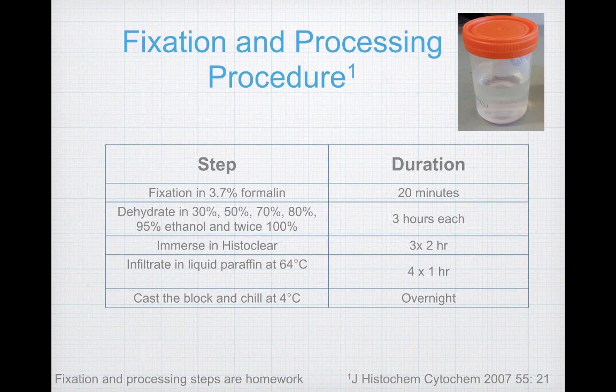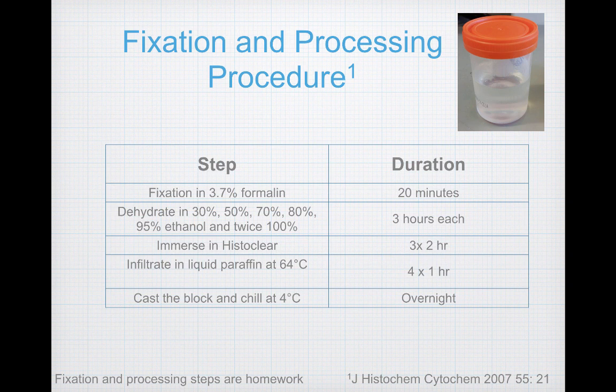Now I've given you background on the major steps in paraffin embedding. Here are a few more details — these steps are done for homework outside of class on your own schedule. Fixation starts with 3.7% formalin; your cartilage will be immersed in this for a duration of 20 minutes. After that, dehydrate the tissue in graded ethanol solutions: 30%, 50%, 70%, 80%, 95%, and twice in 100% ethanol. Each dehydration step should last a minimum of 3 hours, though you can leave the cartilage in each solution longer if your schedule requires it.